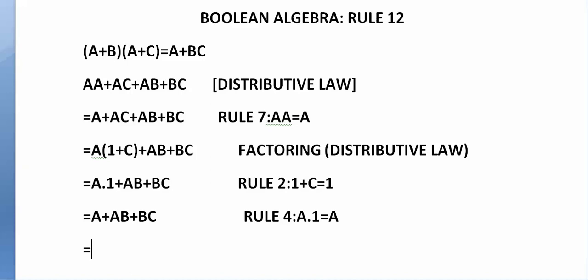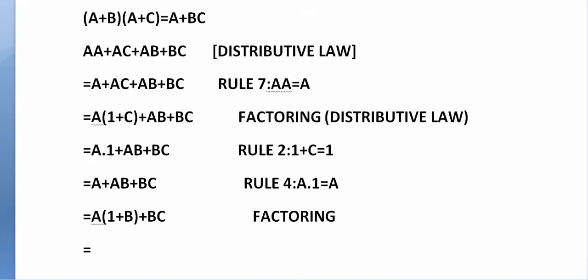Here again we can take A out as a common factor from the first two terms A and A·B. So we will be left with A·(1 or B), and B·C remains the same. Applying factoring again — then 1 or B equals 1 according to Rule 2 of Boolean algebra, wherein ORing a variable with 1 always equals 1. Here we have applied Rule 2.